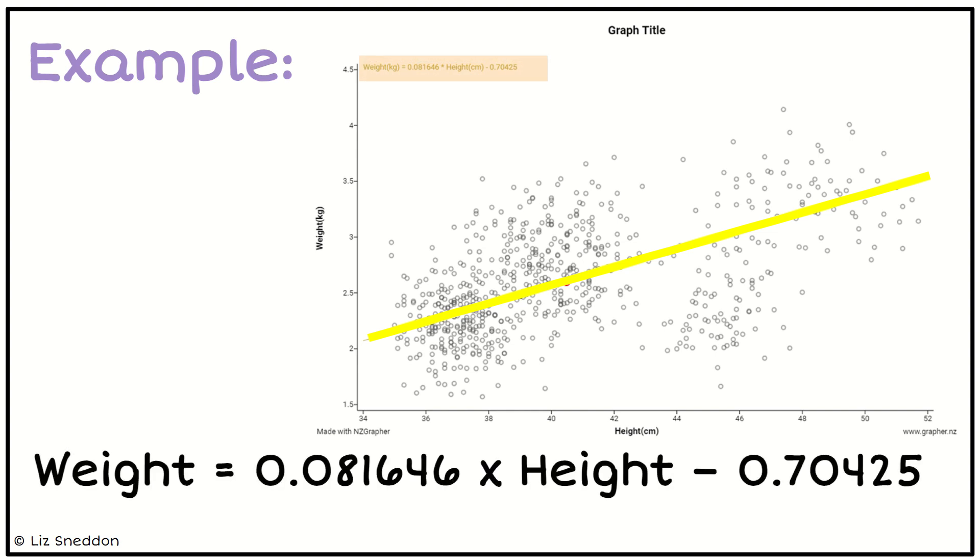Down at the bottom here I've just written it out in larger font. Our weight is equal to a number times the height minus a number. So that's the equation of the line that I fitted to this model.